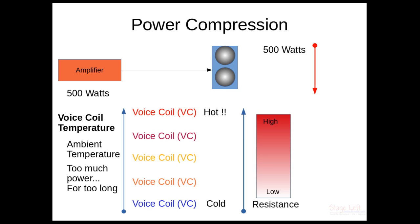That's all it is. Even though you still have 500 watts going to a speaker cabinet, it's pretty common to see probably a 3 dB drop when resistance becomes too high. And in some cases, depending upon the quality of the speaker and how well it was manufactured, you can almost get a 6 dB drop in output from your speaker due to the voice coil becoming hot, which results in a high amount of resistance.